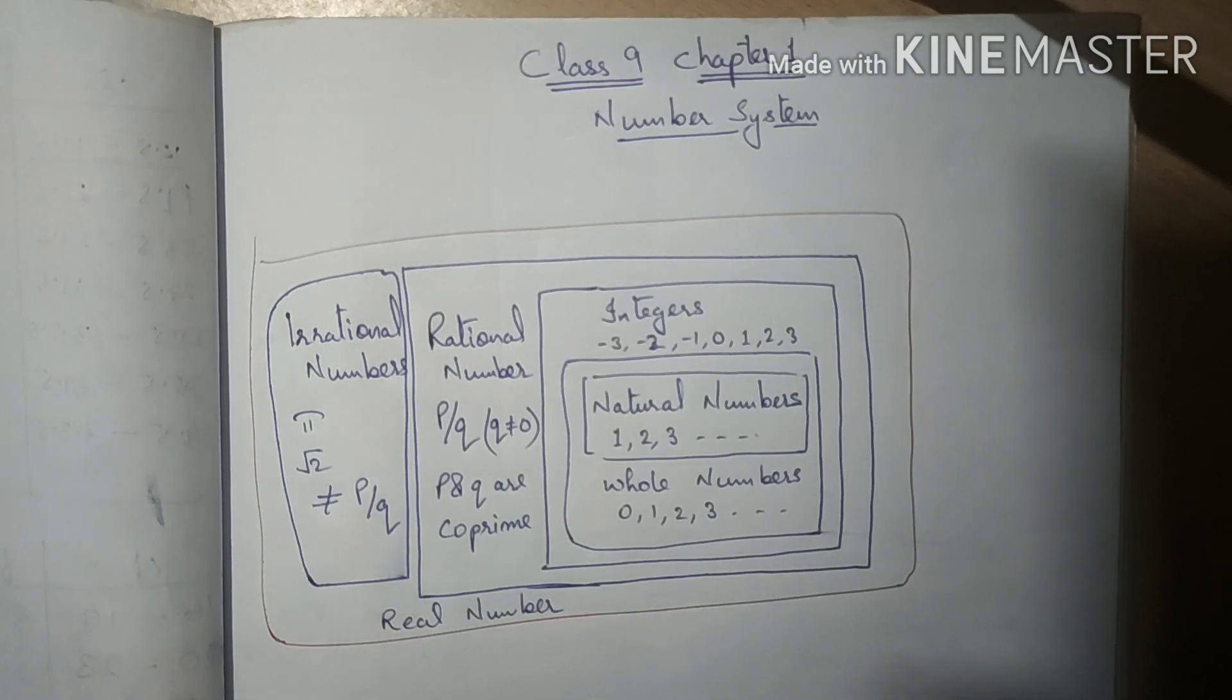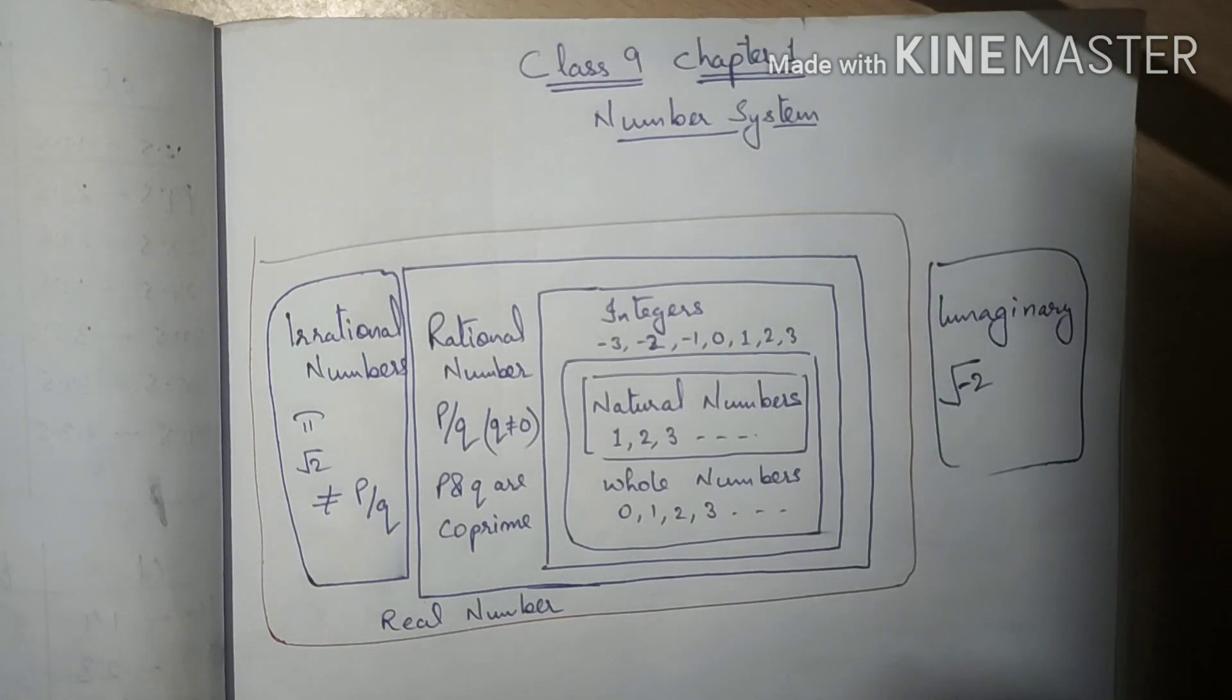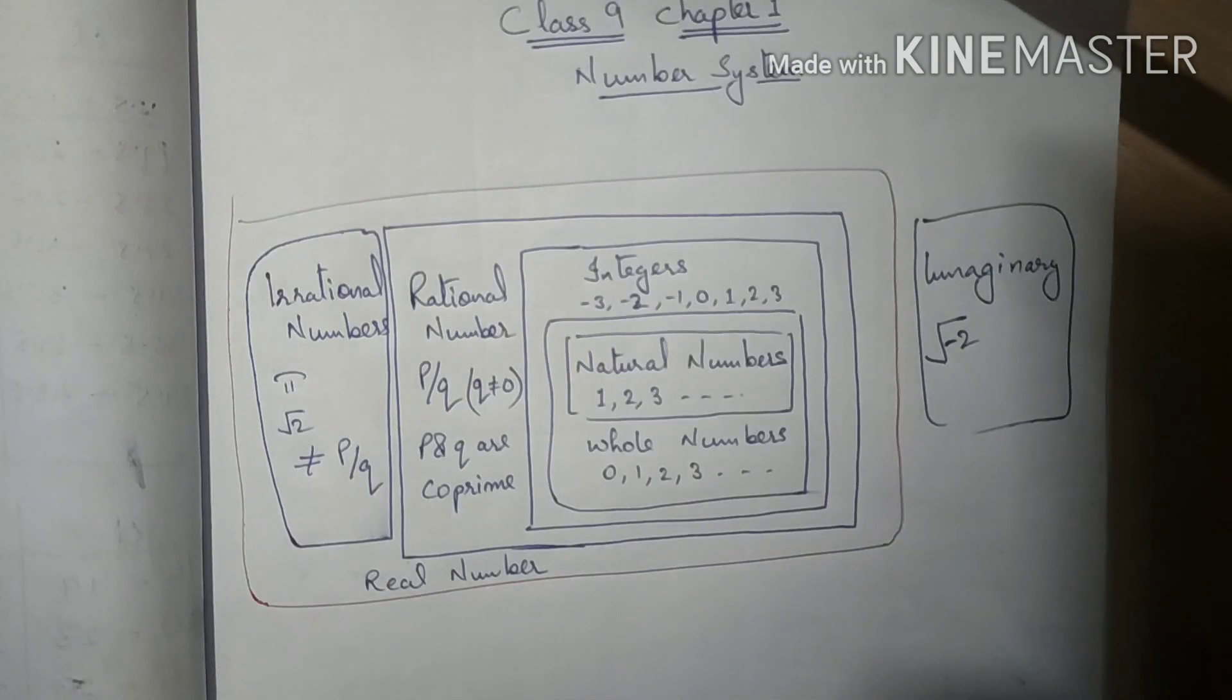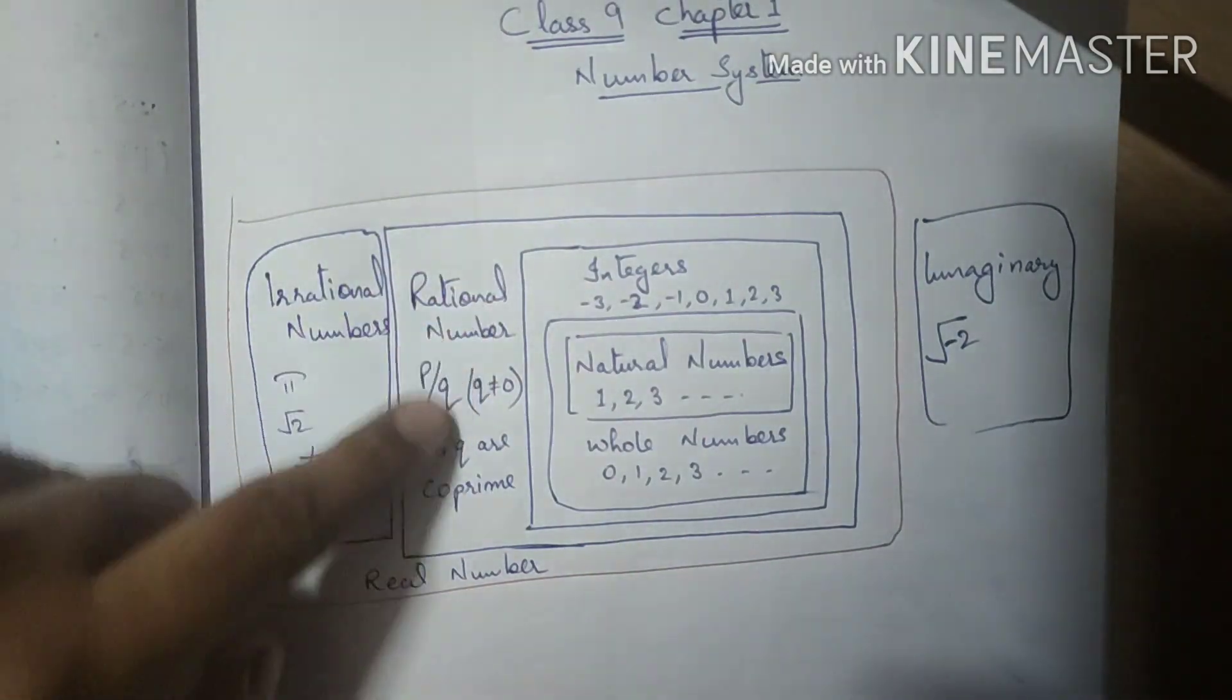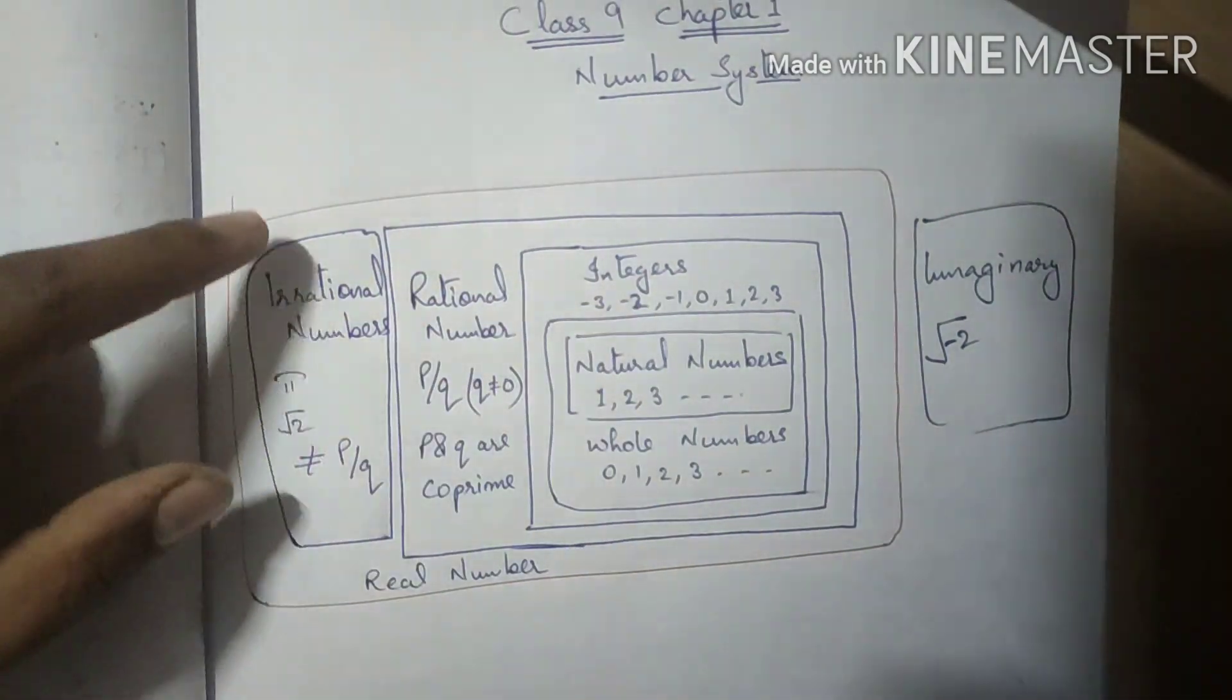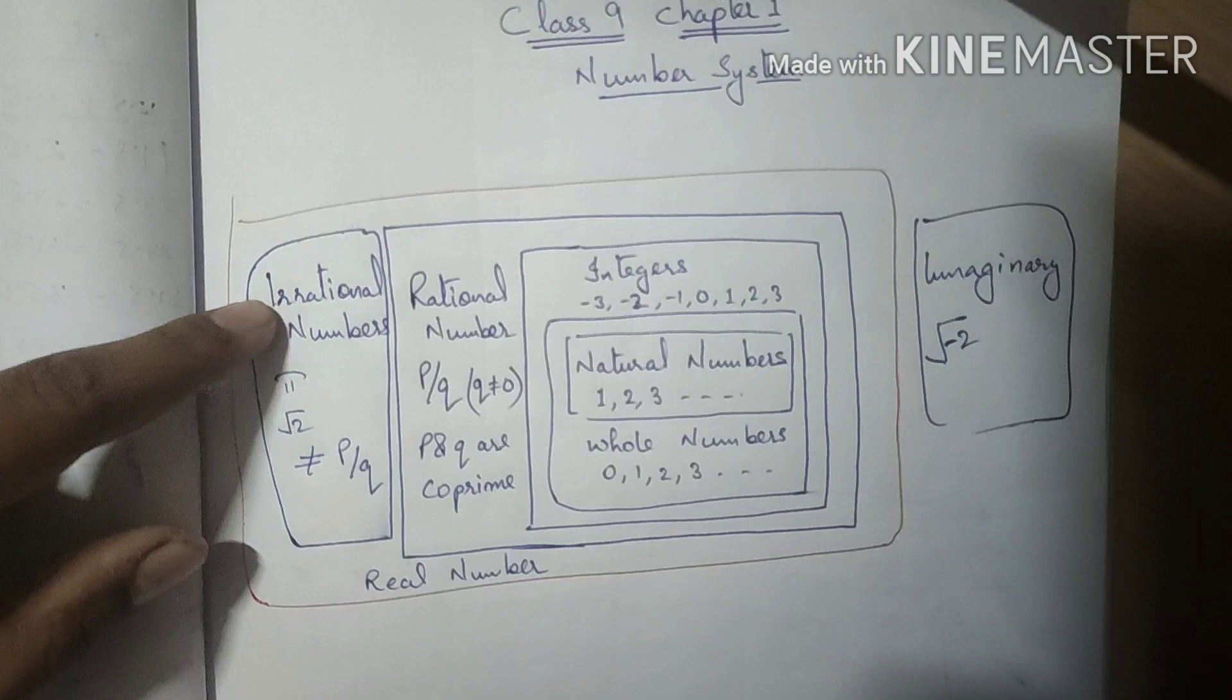A real number is a number which can be represented on the number line. Out of this, we have imaginary numbers which cannot be represented on the number line, like negative numbers inside the root. These are the types of numbers inside the number system. We have studied up to rational numbers in class 8, and now we will be studying about irrational numbers.